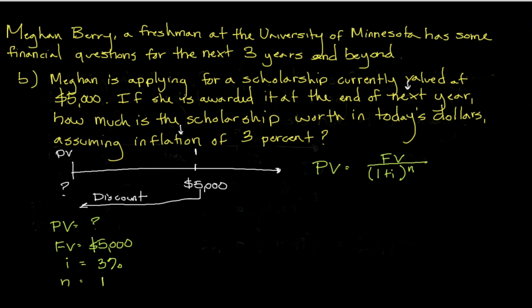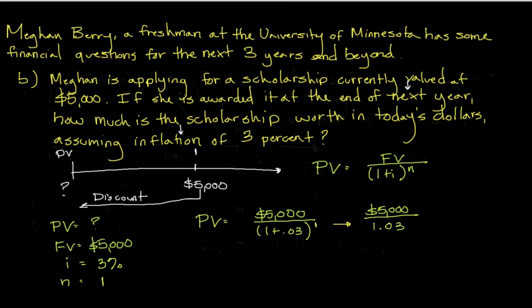We start by filling in the variables. We've got five thousand dollars in the future divided by one plus our interest rate — and we've got to convert this from a percentage to a decimal — so we're using one point zero three to the nth power, which is one. Anything raised to the first power is the exact same number, so we simplify to five thousand dollars divided by one point zero three.